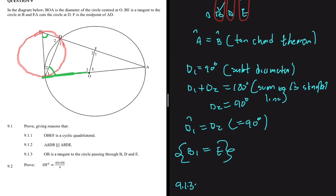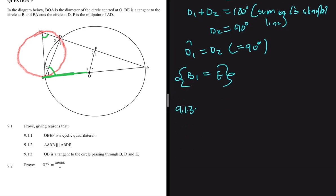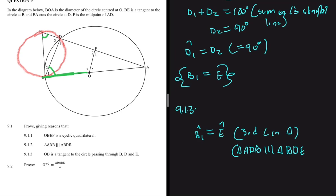That's exactly what we were talking about in 9.1.2 — the two pairs of angles in those triangles are equal to each other, so the remaining two must also be equal because all angles in a triangle add up to 180 degrees. So we say B1 equals angle E because the third angles in similar triangles are equal, and this comes from the fact that triangle ADB is similar to triangle BDE, as we just proved.